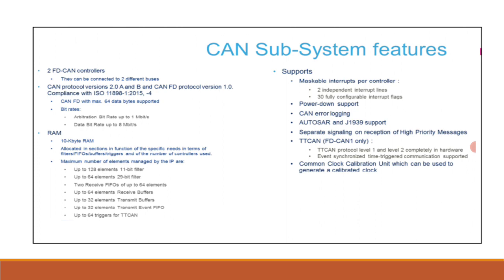The subsystem supports maskable interrupts per controller with two independent interrupt lines and 30 fully configurable interrupt flags, power-down support, CAN error logging, AUTOSAR and J1939 support, separate signaling on reception of high-priority messages. TTCAN is available on FD CAN 1 only, not FD CAN 2. TTCAN protocol level 1 and level 2 are implemented completely in hardware, along with a common clock calibration unit.